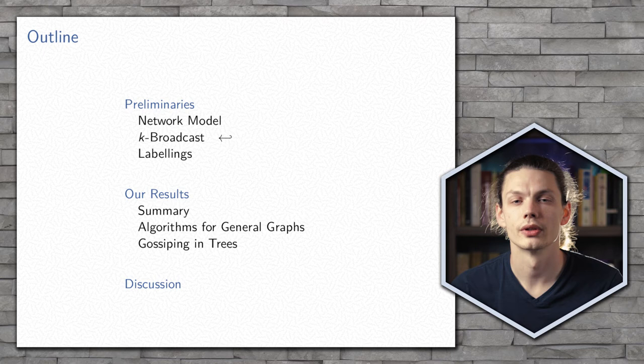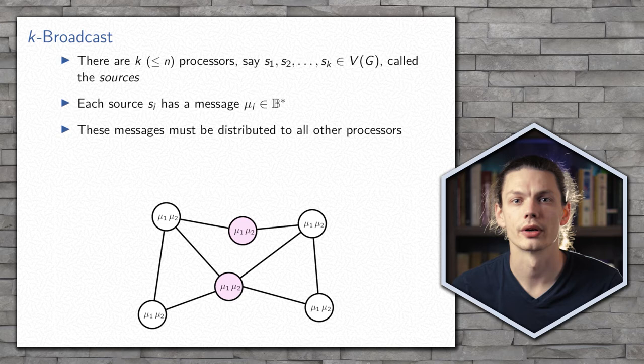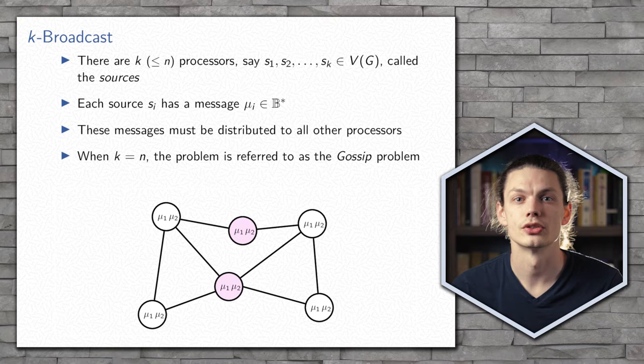Now we'll move on to the K-broadcast problem. In the K-broadcast problem, there's some subset of processors that each contain some message, and all of these messages must be distributed to the entire network. When all of the processors in the network have a message that must be distributed to all other processors, we call the problem the gossip problem.